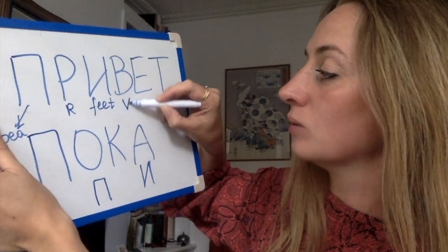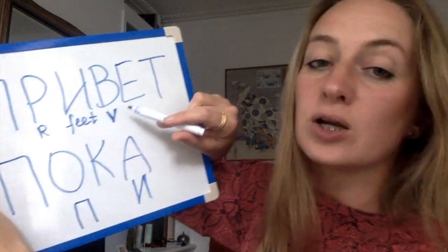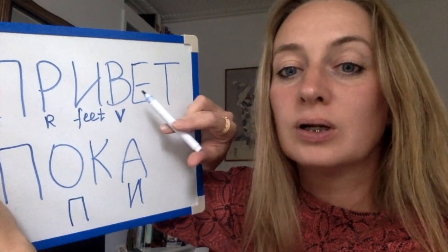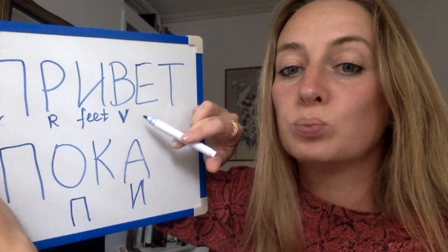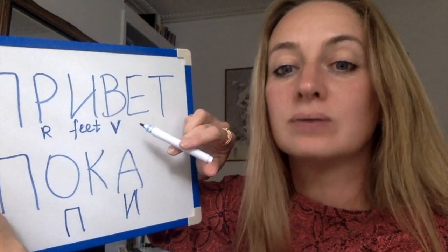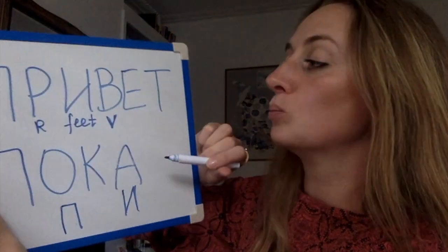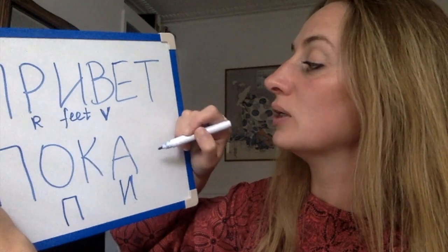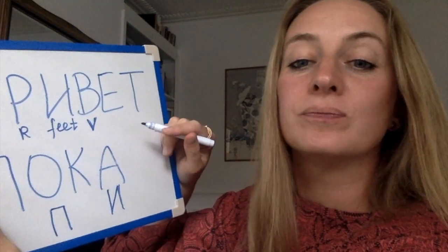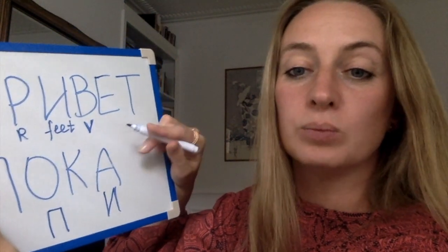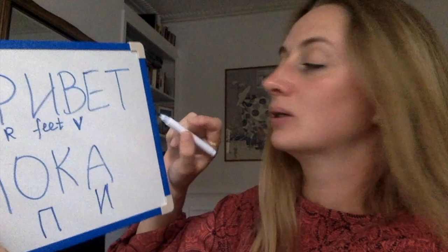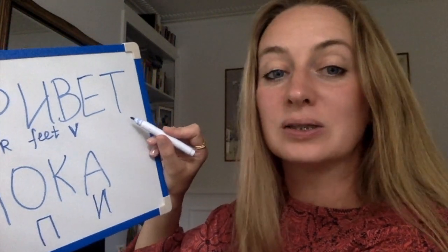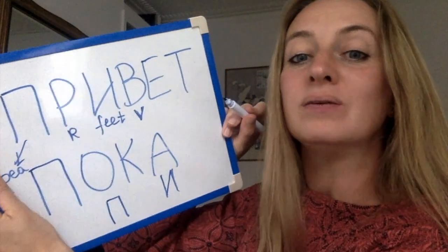This is letter В. In Russian it's written like English letter B, but you pronounce it like V. The next letter is Е, and T is the same as in English. Привет.